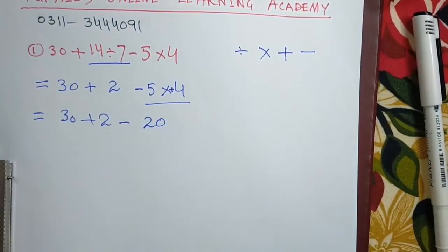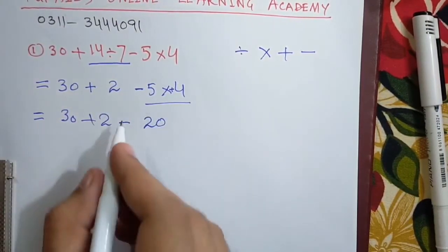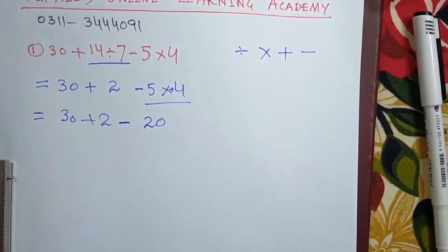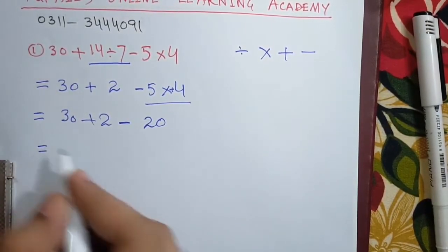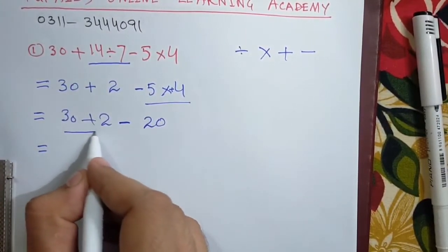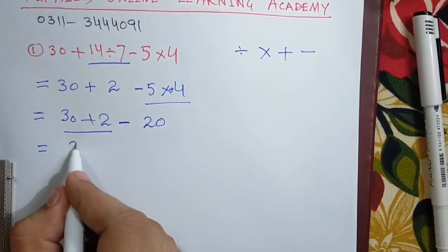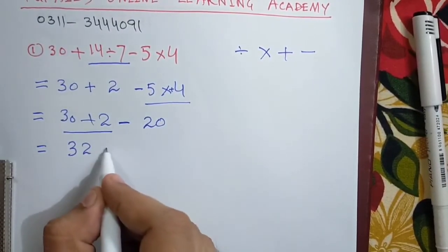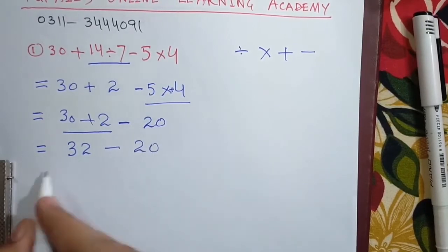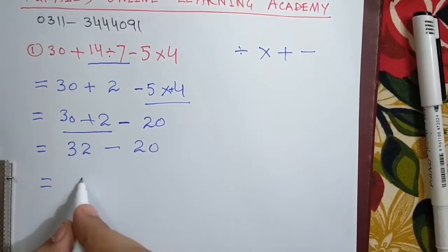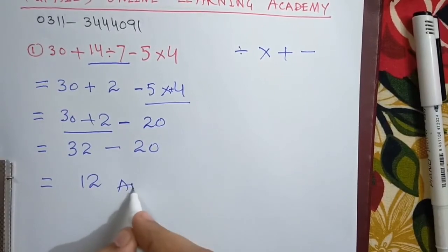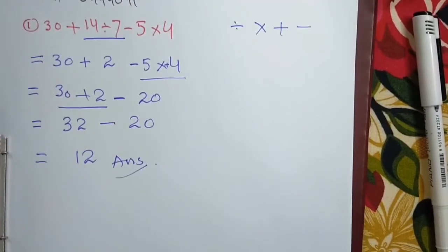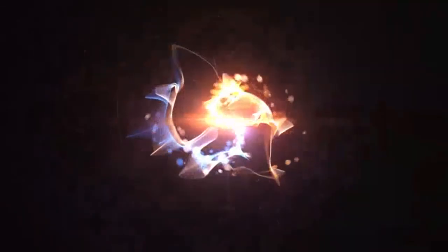So these are two different signs, unlike signs. This is minus and this is plus, this becomes minus. Whenever there's multiplication of unlike signs, this becomes minus. 30 plus 2, this becomes 32, minus 20. 32 minus 20, 12. So our answer is 12.